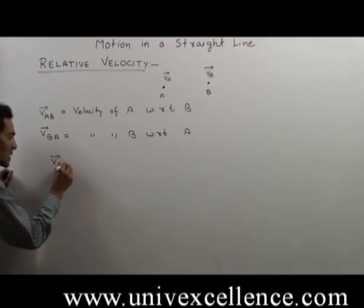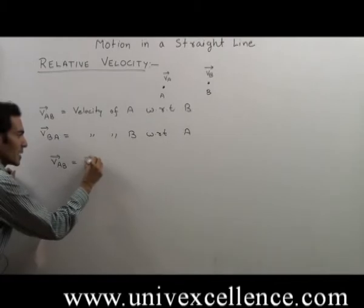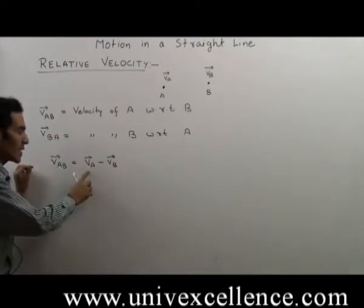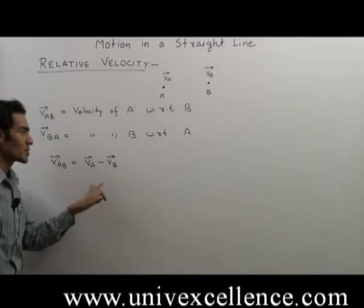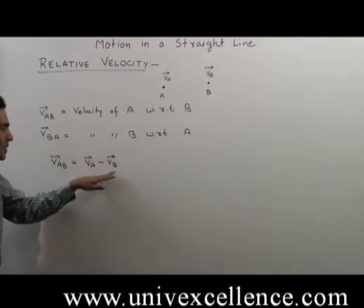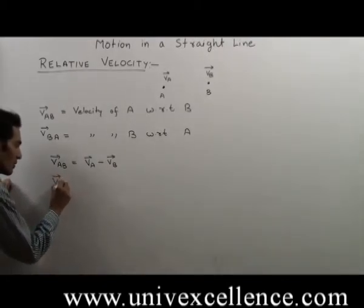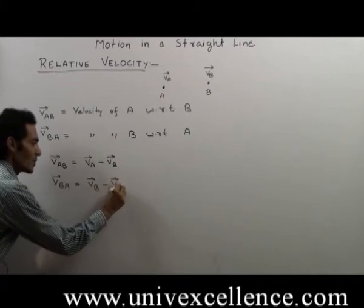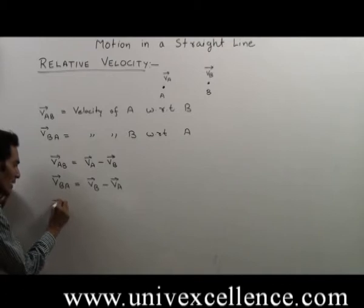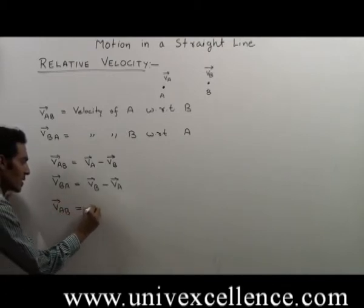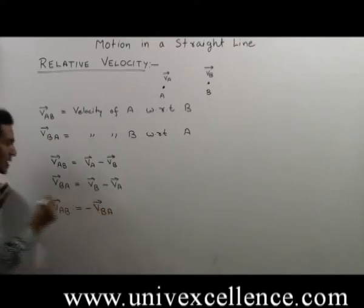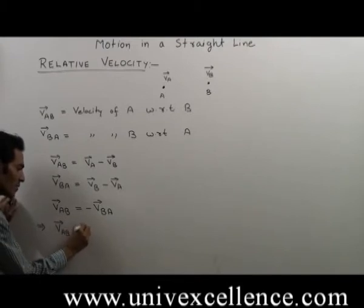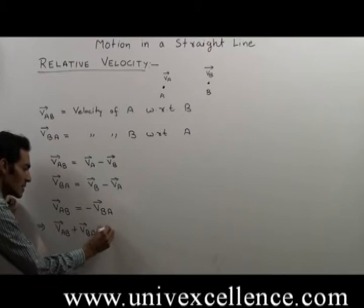Velocity of A with respect to B is defined as VA minus VB, where VA and VB are the velocities of A and B respectively with respect to some common frame of reference, or with respect to the ground. Similarly, VBA, velocity of B with respect to A, is defined as VB minus VA. So we can say that VAB equals negative of VBA, or equivalently, VAB plus VBA equals zero.